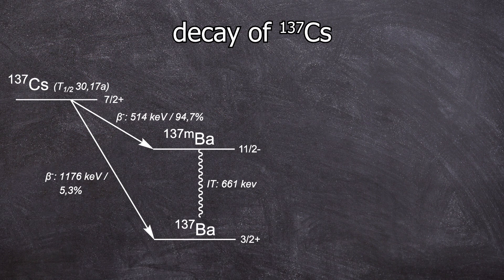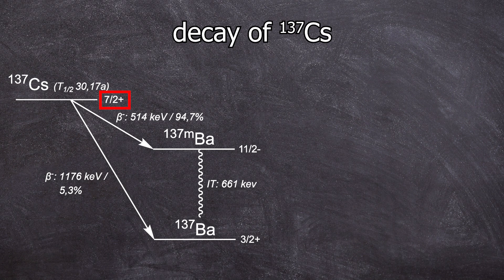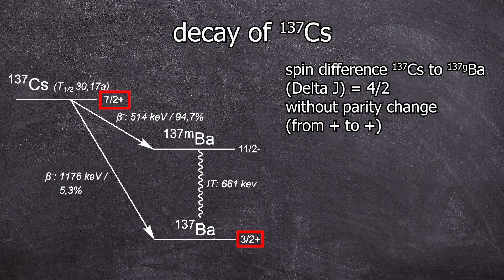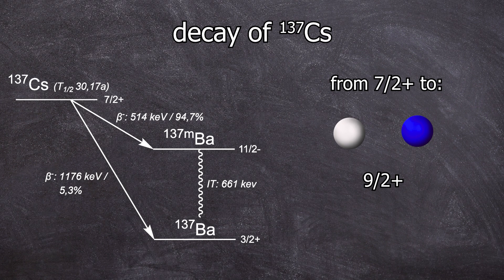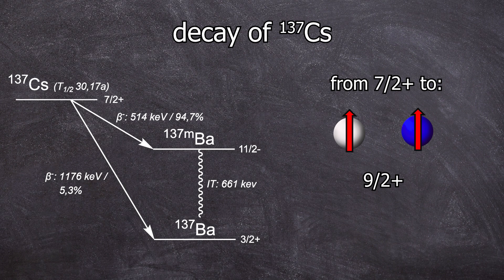Cesium-137 has a spin of 7/2 plus, while barium-137 ground state has a spin of 3/2 plus. This gives us a spin difference of 4/2 without parity change. This spin difference is too large to be carried away by these fermions. During beta decay, only transitions to states with maximum spin difference of 2/2 are possible. For cesium-137, this means the daughter nuclei must have a spin of either 9/2 plus, 7/2 plus, or 5/2 plus.